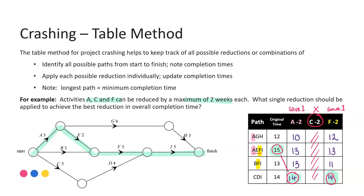So what is the best single reduction? We have the option of either A or F, and both of those will save us just one unit each.